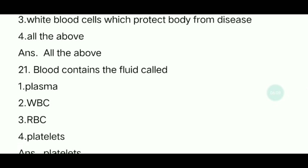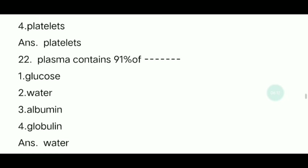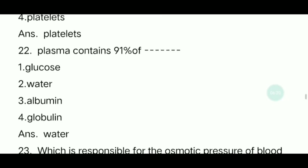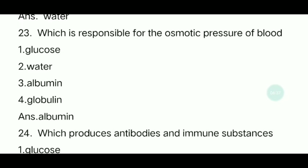Twenty-first question: Blood contains a fluid called what? The answer is plasma. Twenty-second question: Plasma contains 91 percent of what? The answer is water. Twenty-third question: Which is responsible for the osmotic pressure of blood? The answer is albumin.